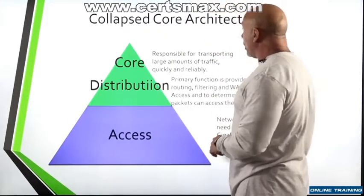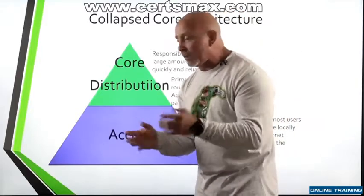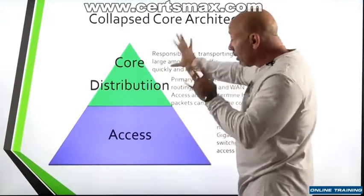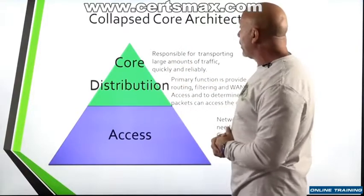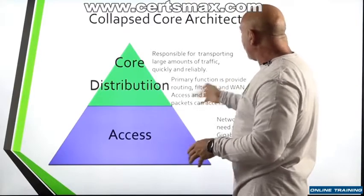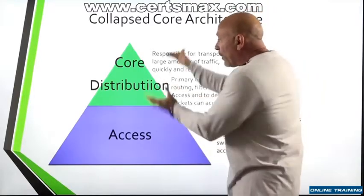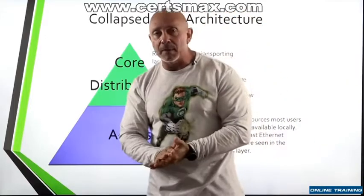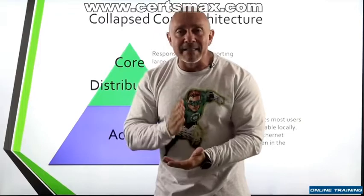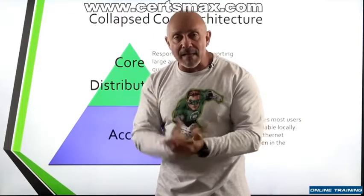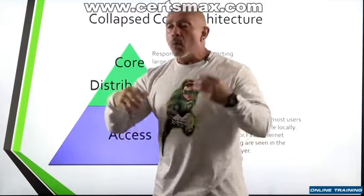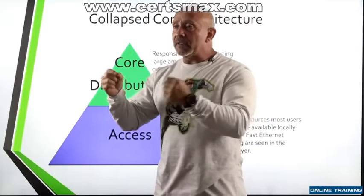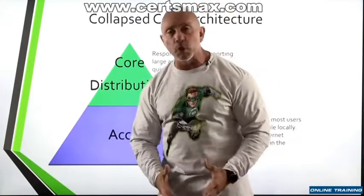Now we look at the collapse core architecture — everything that happened in three layers is now happening in two layers. These two layers are responsible for transporting large amounts of traffic and providing routing, filtering, and WAN access. They're trying to put everything into one combined layer. But remember, this is a guideline — everything depends on the size, complexity, and what devices you're using in your network. This is just something that is a goal; let's try to get as close as possible to it.